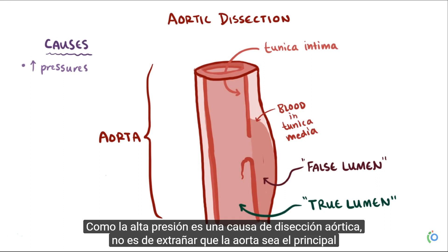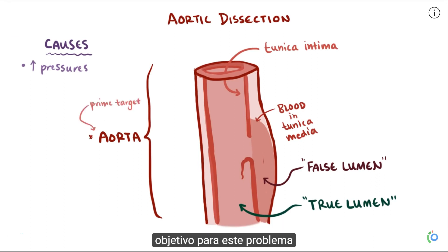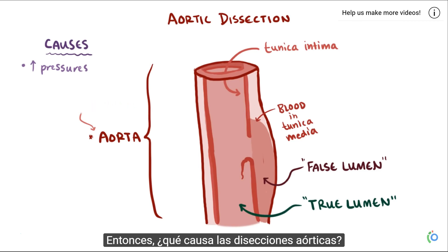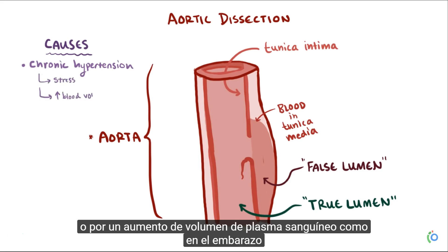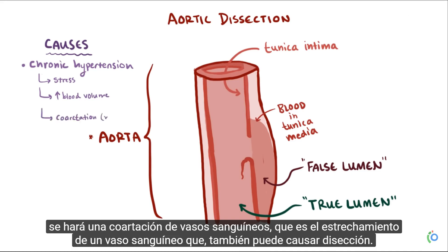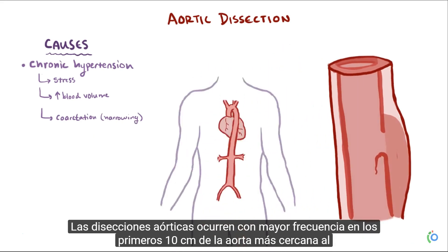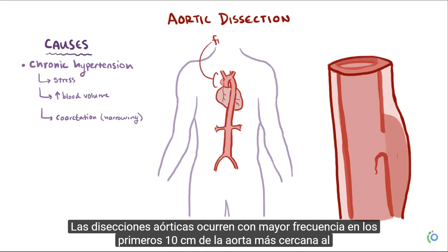Since high pressure is the cause of aortic dissection, it's no surprise that the aorta is the prime target for this problem. Chronic hypertension is the major cause, whether the hypertension is caused by stress or from increased blood plasma volume like in pregnancy. Blood vessel coarctation, which is the narrowing of a blood vessel, can also cause dissection. Aortic dissection most often happens in the first 10 centimeters of the aorta closest to the heart.